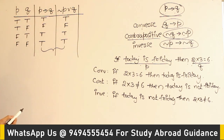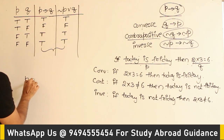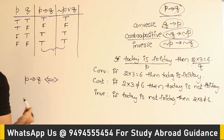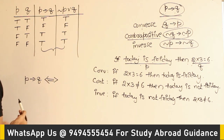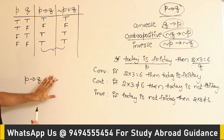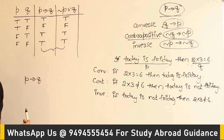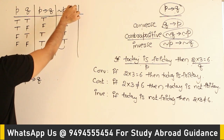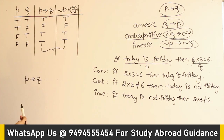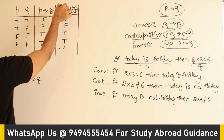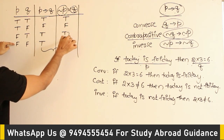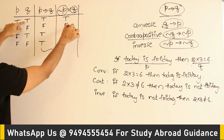Therefore these two are said to be equivalent. P implies Q is equivalent to negation P or Q — this is represented with an equivalence symbol. Whenever Q is true the value of the conditional statement is true, and whenever P is false the value of the conditional statement is also true.